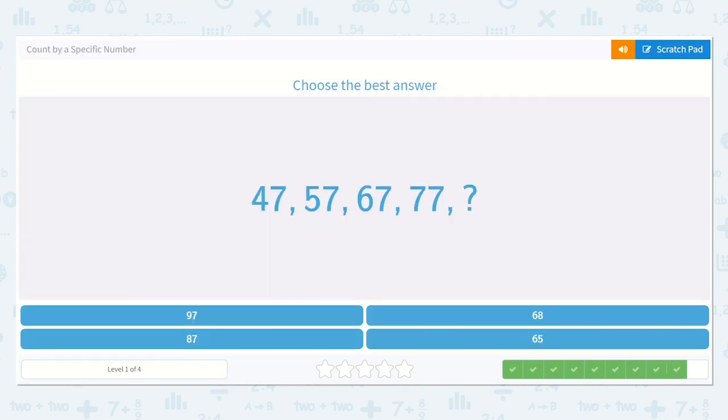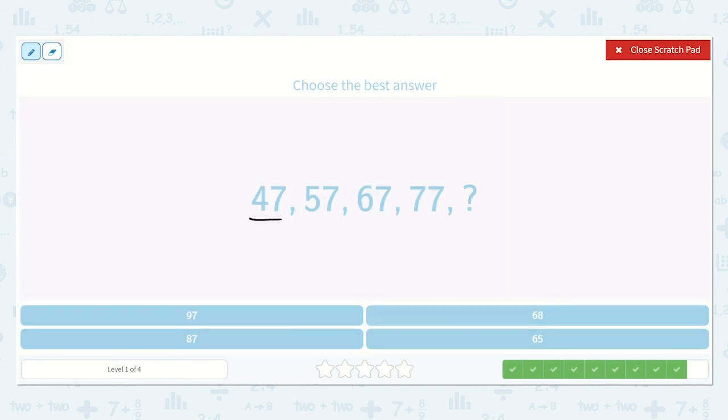All right, here is 47, 57, 67, 77. Do you see it here as well? Four, five, six, seven, eight. So we have eight tens. How many ones in all of these? Yeah, seven. So we are just going up by ten, and the next one is 87.